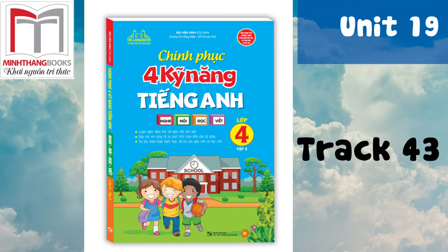Activity 2: Listen and write 5 animals that the speaker mentions. It's Sunday today. My friends and I go to the zoo. There are many animals there. Jack wants to see monkeys because they're clever and funny. Anna and Jane want to see peacocks because they are very beautiful and friendly. Henry wants to see bears because they are big and cute. We don't want to see tigers and crocodiles because they are very scary.